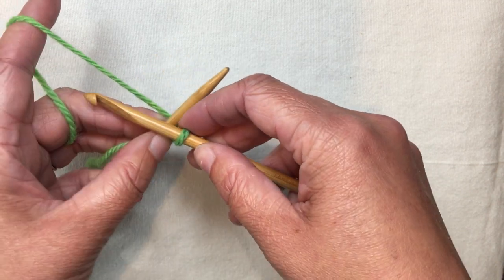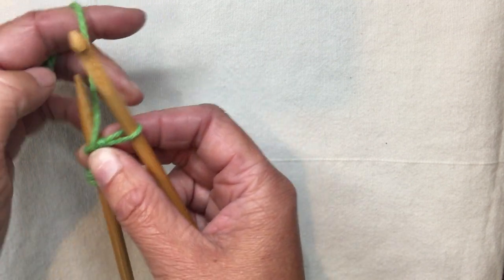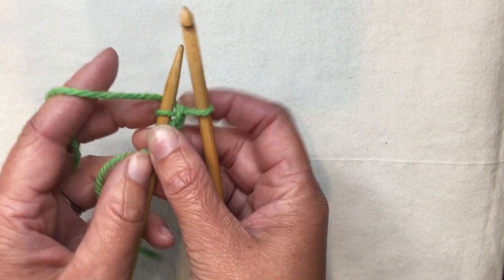The yarn's in back, the hook's in front. My hook catches the yarn, pulls it through, and then I need to move the yarn to the back again. Catch the yarn, pull it through, move the yarn to the back.